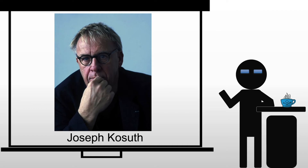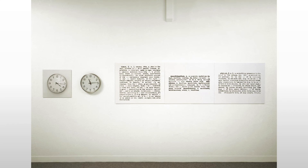Joseph Kosuth was one of the originators of conceptual art in the mid-1960s, and that will be an influential movement through the 70s and all the way up to today. What he pioneers is the use of words in place of visual imagery of any kind, and explores the relationship between ideas and images and words used to convey them.